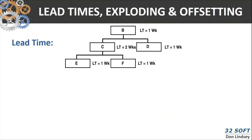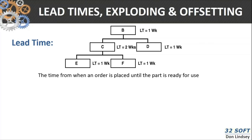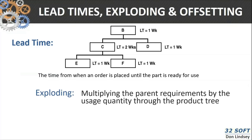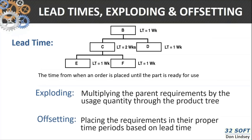The lead time explosion and offsetting: here we've got a simple bill of material with the lead time that it takes to build each level in this product structure. The time from when an order is placed until a part is ready for use is the lead time. We explode that by multiplying the parent requirements by the usage through the product tree, then offset it by the lead time based on either the planner's or buyer's estimate of how long it's going to take to place the order and have it ready for use.